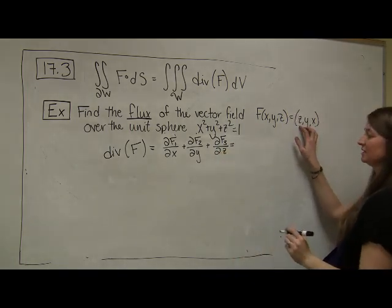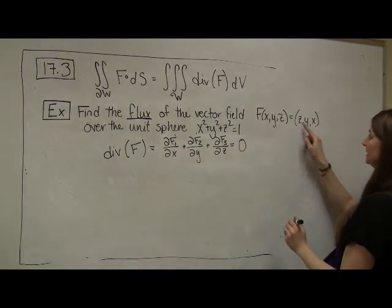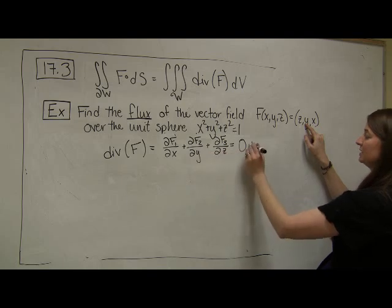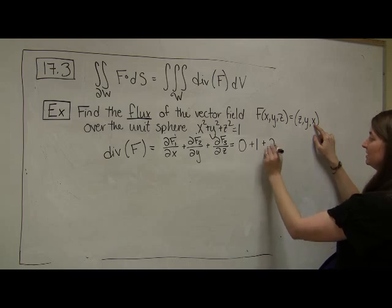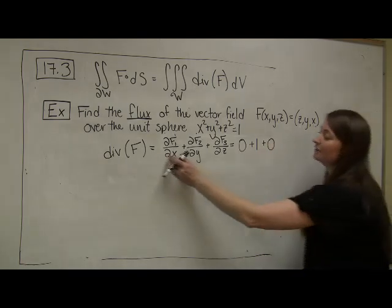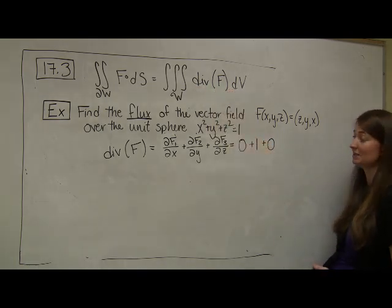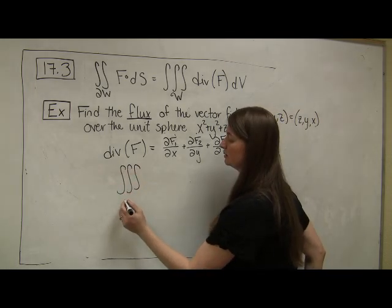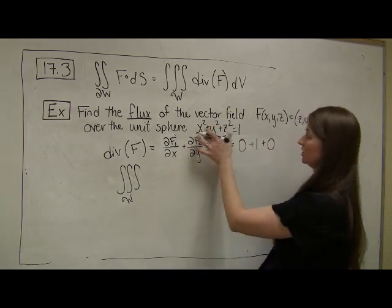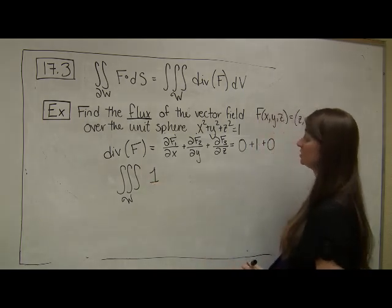And let's look at what our f function is in this case. The first component is z, so the partial with respect to x is 0. The second component is y, so the partial with respect to y is 1. And the last component is x, so the partial derivative with respect to z is 0. Notice that you could get a function that's a function of x, y's, and z's. It might not be the constant 1. And that's okay, because we know how to integrate if we have x, y's, and z's when we set this up as our triple integral. Now we're taking the triple integral over w, which in this case is our sphere, of the divergence of f, which in this case is really easy. It's just 1.